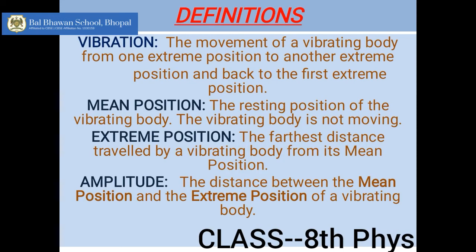What are the definitions we learnt in today's class? First, vibration: the movement of a vibrating body from its one extreme position to another and back to the first extreme position. The second definition was mean position, which is the resting position of a vibrating body — when it is not moving, it is simply at rest. Then, extreme position is the farthest distance which a vibrating body travels from its mean position. The distance between the mean and the extreme position of a vibrating body is called its amplitude — it can be measured in centimeters, meters, or millimeters because it is a distance. Please go through your chapter on Sound in your science book, pages 152 and 153, very carefully. In the next class, we will study about the various sound vibrations.